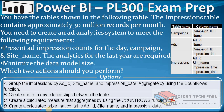Option D is to create a calculated table that contains ad ID, site name, and impression date. Creating a calculated table would again increase the model size, as it requires additional storage space in the model. So this option does not meet the second requirement and can be ignored. Therefore, options A and B — grouping the table and creating one-to-many relationships — are the correct actions.